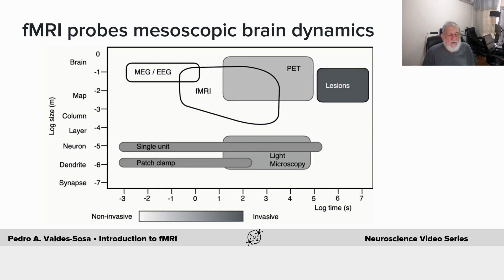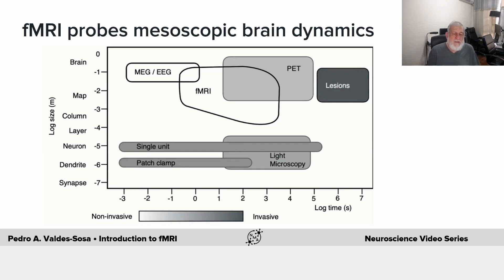In fact, one speaks of spatial and temporal resolution, which tells us it's a measure of how close two points of activity can be in the brain and still be distinguished, and how close in time they can be. The higher the spatial resolution, the closer and with more detail you can see it — likewise for temporal resolution.